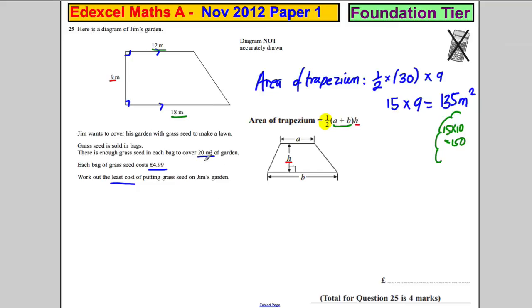Now, each bag covers 20 meters squared. So how many bags does he need? Well, he has to buy whole bags. Seven bags will get 140 meters squared. So he needs seven bags because seven times 20 is 140 meters squared.